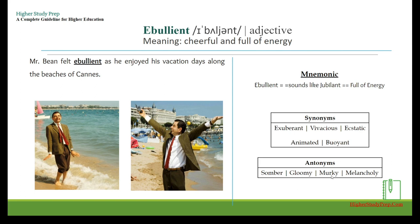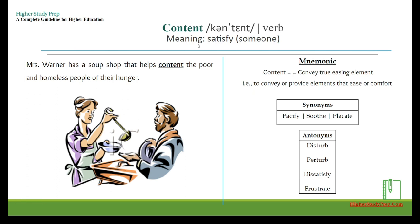Content — it's a verb which means to satisfy someone. For example, Mrs. Warner has a soup shop that helps content the poor and homeless people of their hunger. The mnemonic for content can be remembered as 'convey true easing element' — that is, to convey or provide elements that ease or comfort.